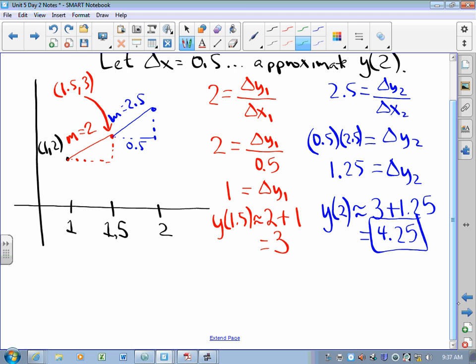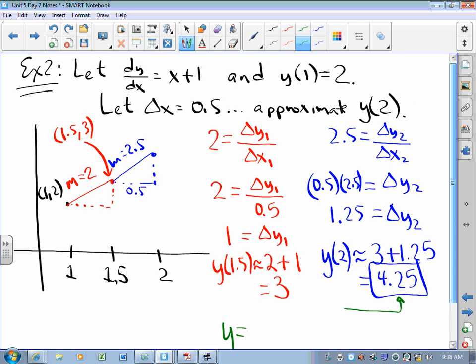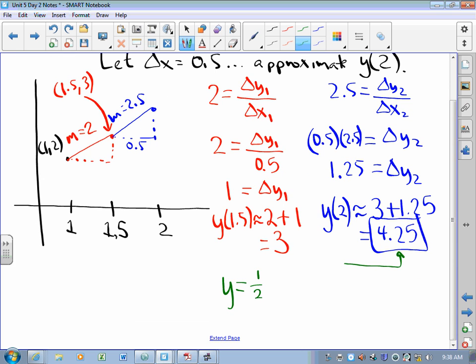On a side note, how bad an approximation is this? Well, the actual solution curve, let's take a look at the derivative. I need something whose derivative is x+1. And that would be (1/2)x² + x plus a constant. The constant that I would need to get the curve to go through (1,2). And that happens to be 1/2. So if we figure out what y(2) actually is, it's actually 4.5.